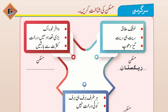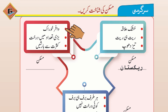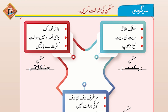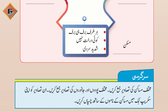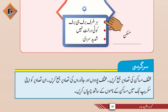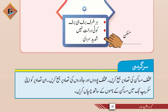پھر تین اور hints: وافر خوراک، بڑی تعداد میں درخت، اور کثرت سے بارشیں۔ یہ ہے جنگلاتی مسکن، یعنی جنگل — ان تینوں چیزیں جنگل میں ہوتی ہیں۔ اب تیسری activity: ہر طرف برف ہی برف، کوئی درخت نہیں، شدید سردی — یہ ہے قطبی مسکن، یعنی ایسا علاقہ جہاں ہمیشہ برف موجود رہتی ہے۔